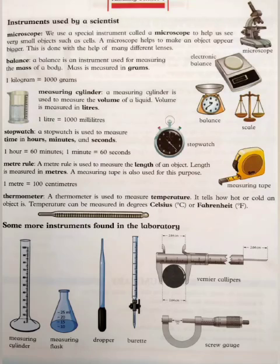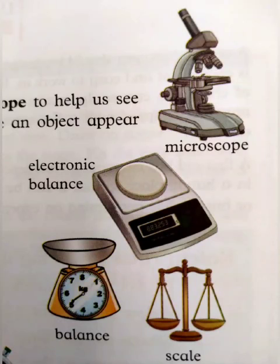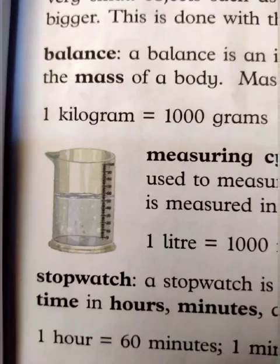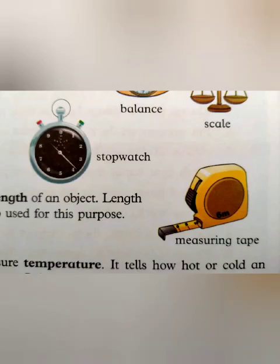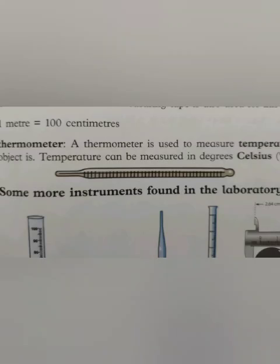Students، آپ نے instruments کے بارے میں جانا تھا جو ایک scientist laboratory میں use کرتا ہے۔ سب سے پہلا تھا Microscope — یہ ہمیں چھوٹی سے چھوٹی چیز کو بڑھا کر دکھانے میں مدد دیتا ہے، جیسے کہ cell۔ Next تھا Balance — یہ کسی بھی چیز کا weight find out کرنے کے لیے use ہوتا ہے۔ Next ہے Measuring Cylinder — یہ کسی بھی liquid کا volume measure کرنے کے لیے استعمال ہوتا ہے، جیسے کہ milk کو liter میں measure کیا جاتا ہے۔ Next ہے Stopwatch — یہ time کو minute، second، اور hour میں measure کرنے کے لیے use ہوتا ہے۔